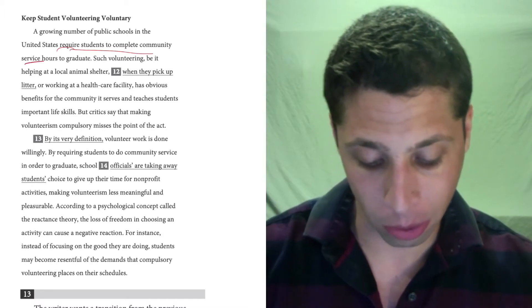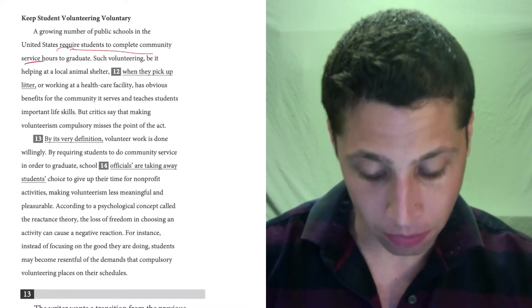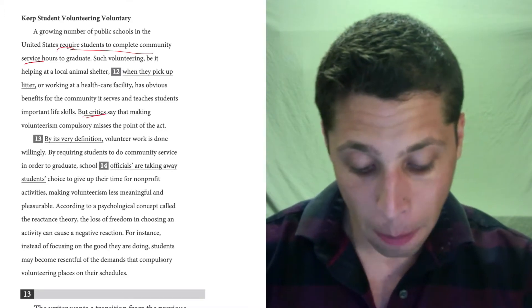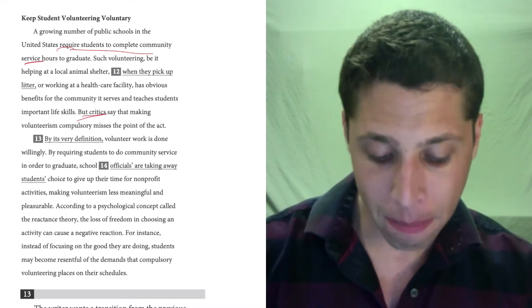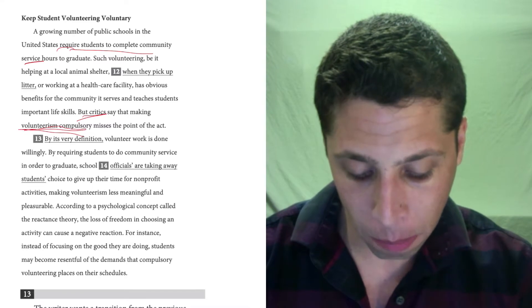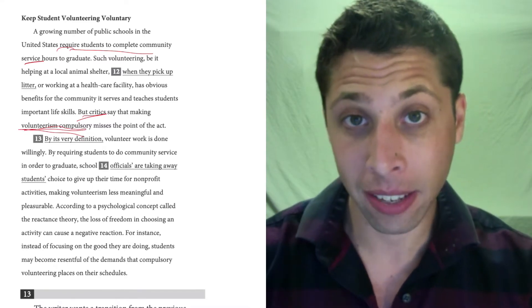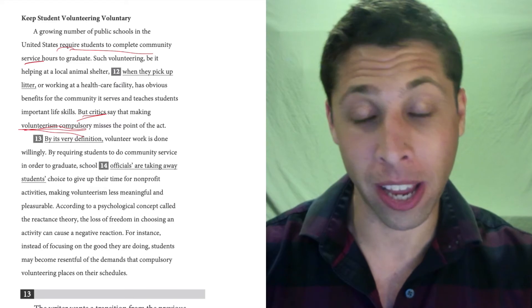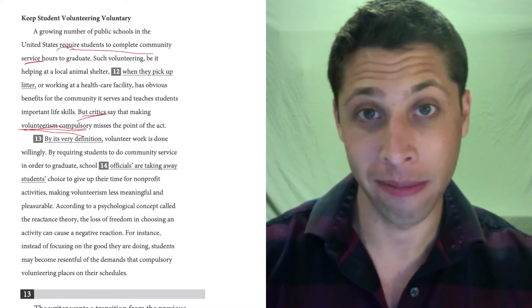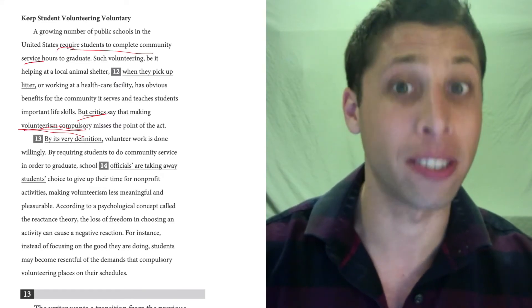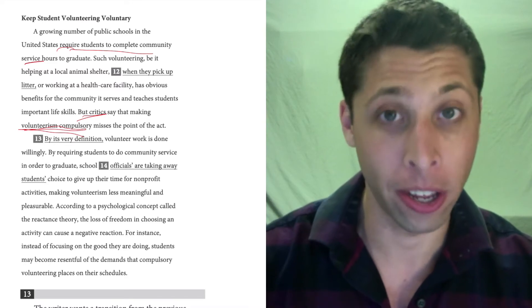A growing number of public schools in the United States require students to complete community service. Such volunteering, being helping at a local animal shelter, benefits the community, teaches life skills. But critics say that making volunteerism compulsory misses the point of the act. So volunteering, where you say I want to do something, shouldn't be required is what the criticism is, right? They use that word required earlier in the passage.